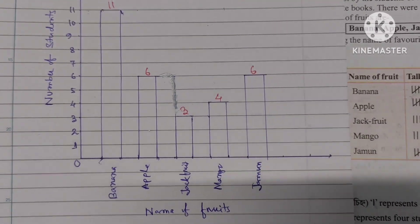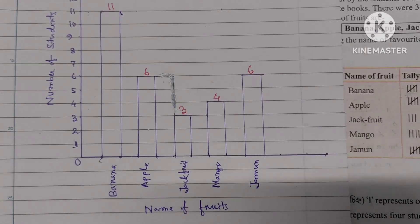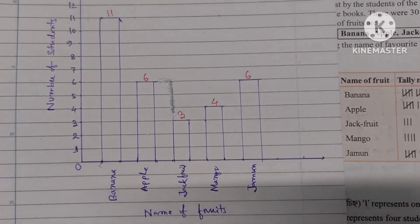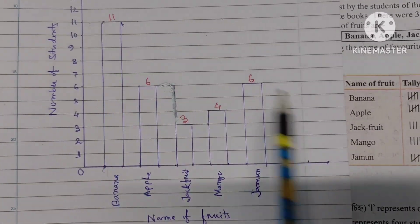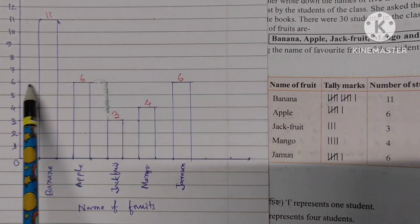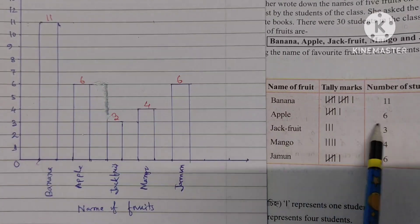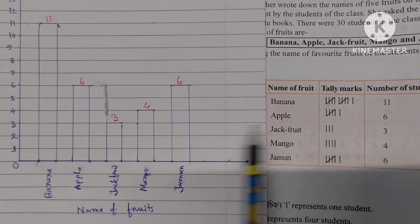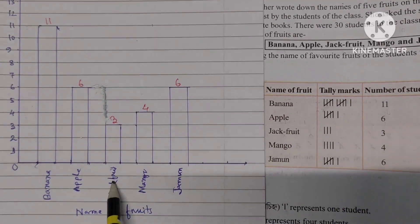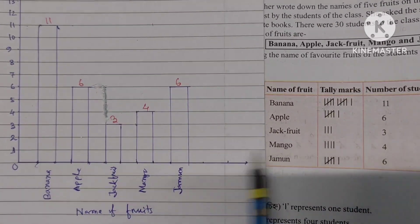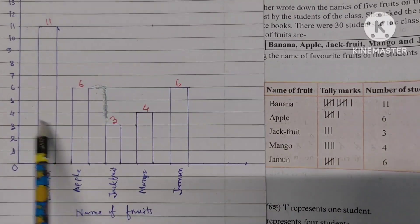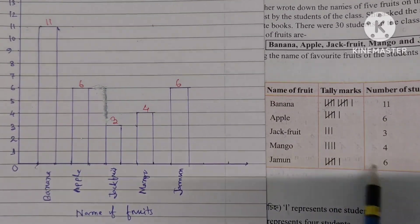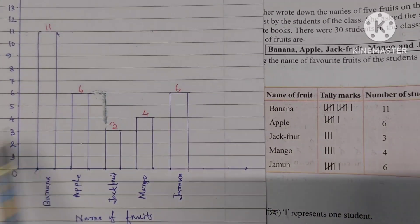In this way, we can represent the data of the table by a bar diagram. Banana has 11 students, Apple has 6 students, Jackfruit has 3 students, Mango has 4 students, and Jamun has 6 students.